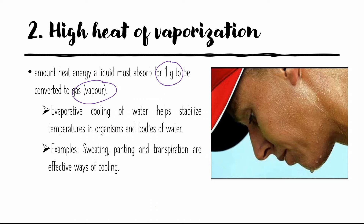As water molecules absorb heat, they move faster and the hydrogen bonds between water molecules constantly break. As the liquid evaporates, it absorbs heat energy and the remaining surface is left cool — this is called evaporative cooling. Evaporative cooling helps stabilize temperature in organisms and water bodies. An example is sweating.